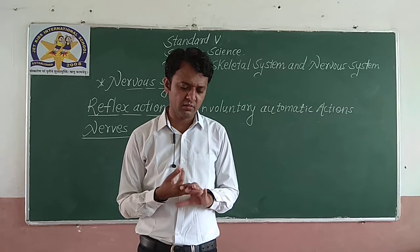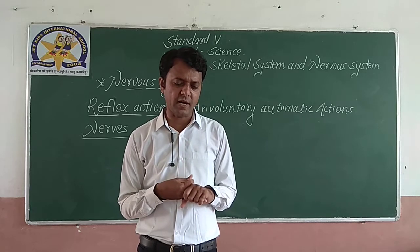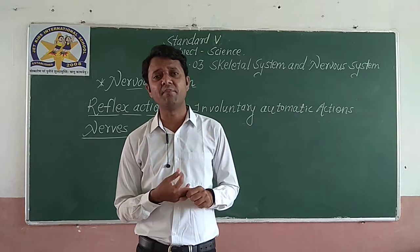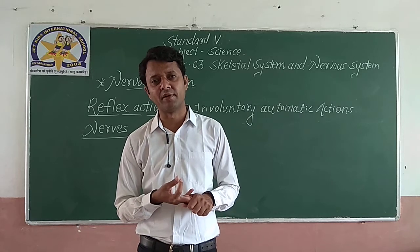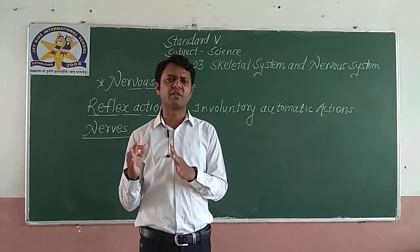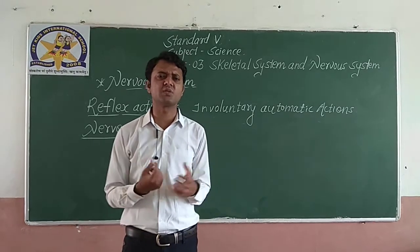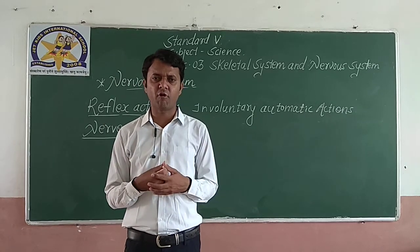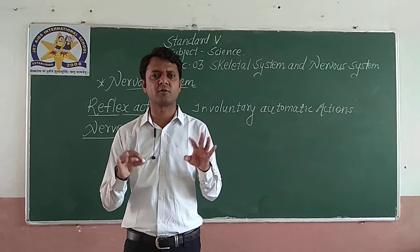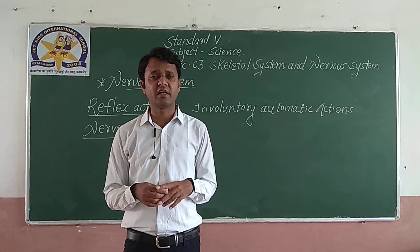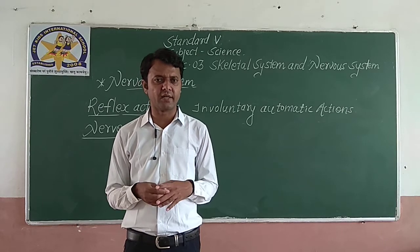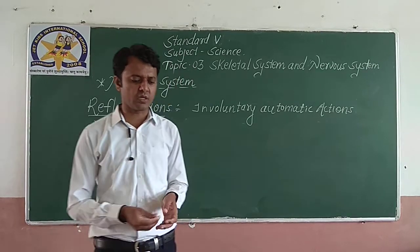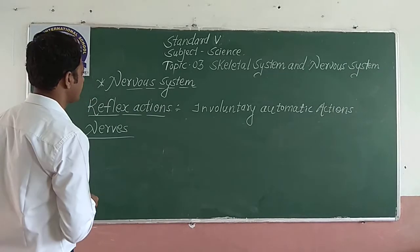These thread-like structures carry messages between the brain or spinal cord and other parts of the body. Depending on their functions, there are three main types of nerves: sensory nerves, motor nerves, and mixed nerves.